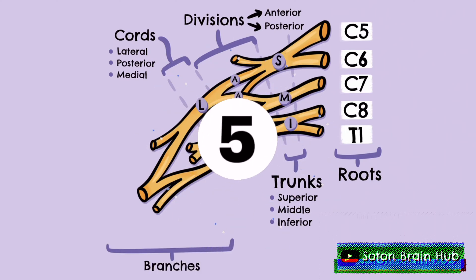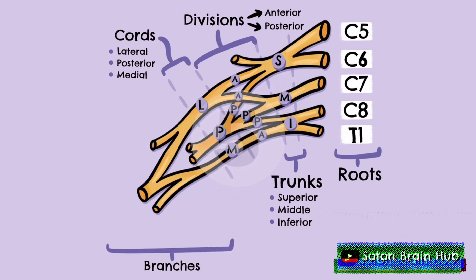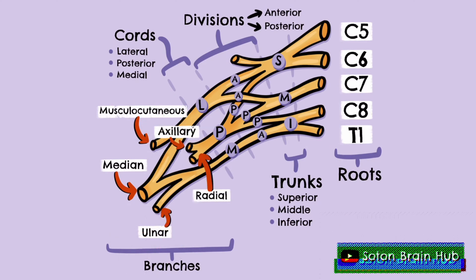From here, the five terminal branches of the brachial plexus are formed. These terminal branches are the median, musculocutaneous, ulnar, axillary and radial nerves.